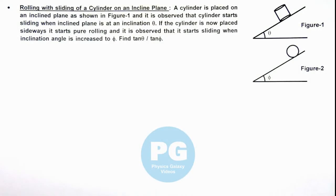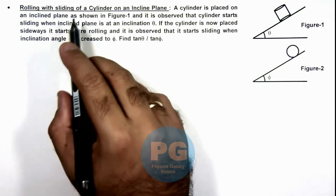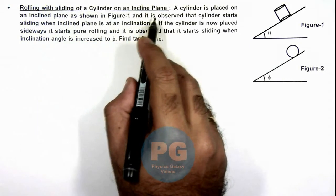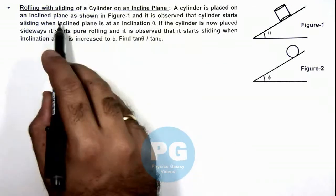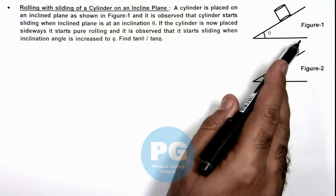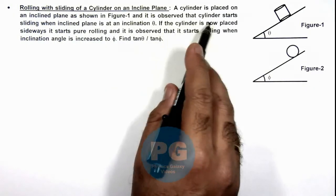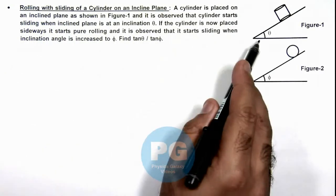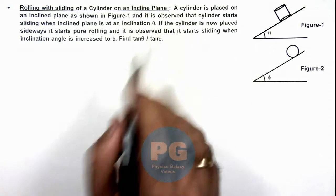In this illustration we'll analyze the rolling with sliding of a cylinder on an incline plane. Here we are given that a cylinder is placed on an incline plane as shown in figure 1, and it is observed that cylinder starts sliding when incline plane is at an angle theta. That means this angle theta is the angle of repose.